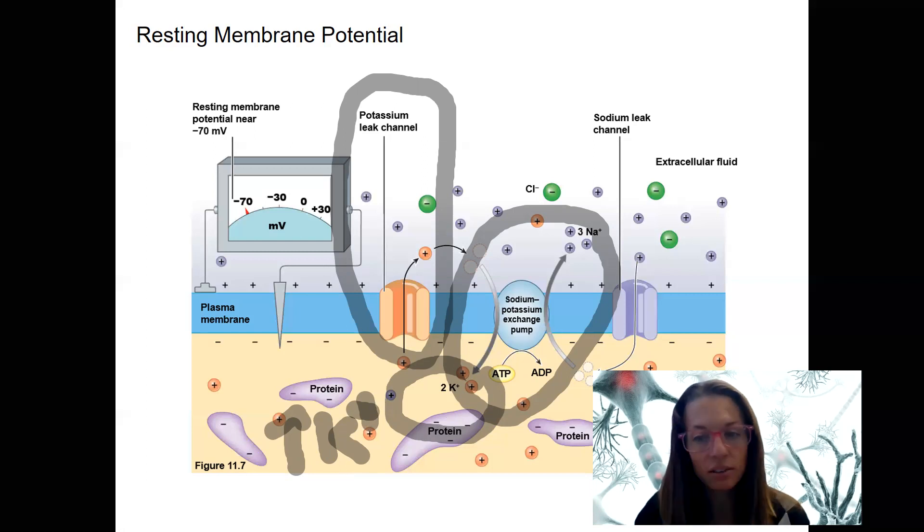Ions, constant movement, leak, right? Of ions down their electrochemical gradients. Potassium leak channels are most prevalent. They are more common. There's more of them than there are sodium leak channels. So this constant movement of potassium out contributes to the negative resting membrane potential.